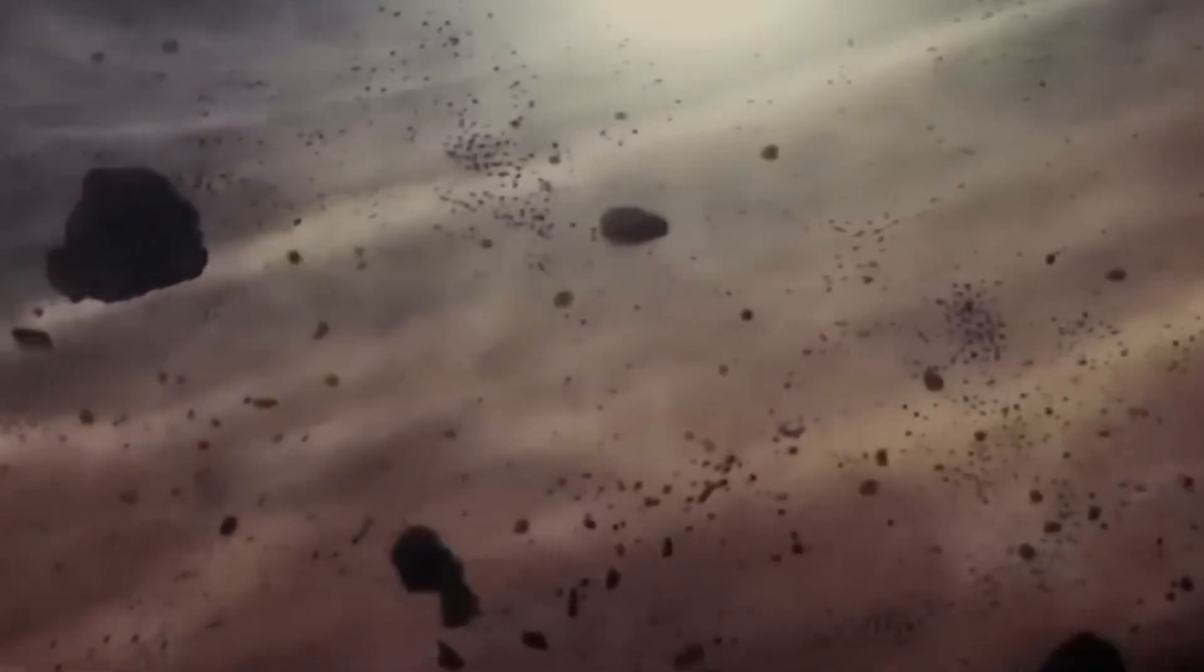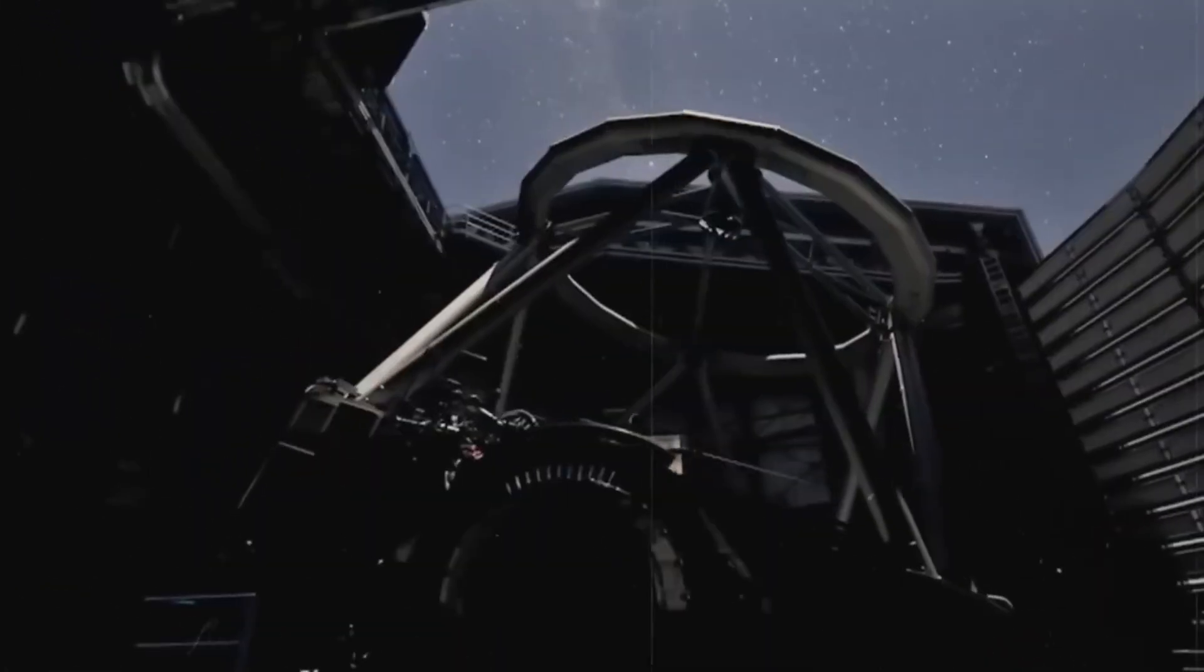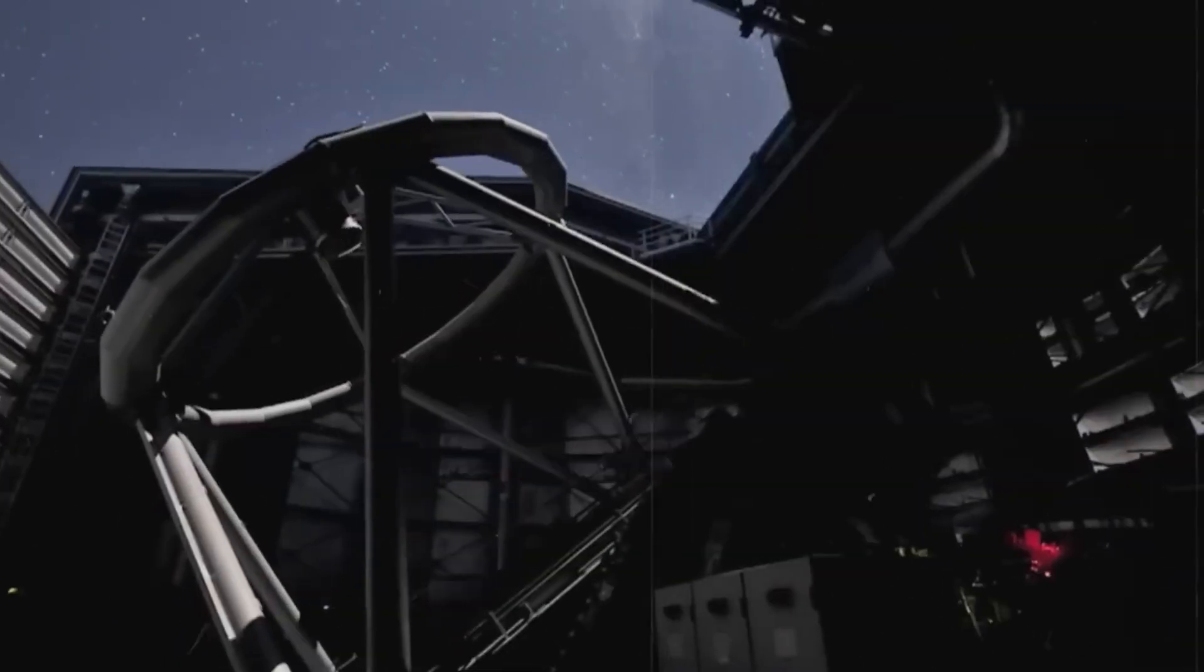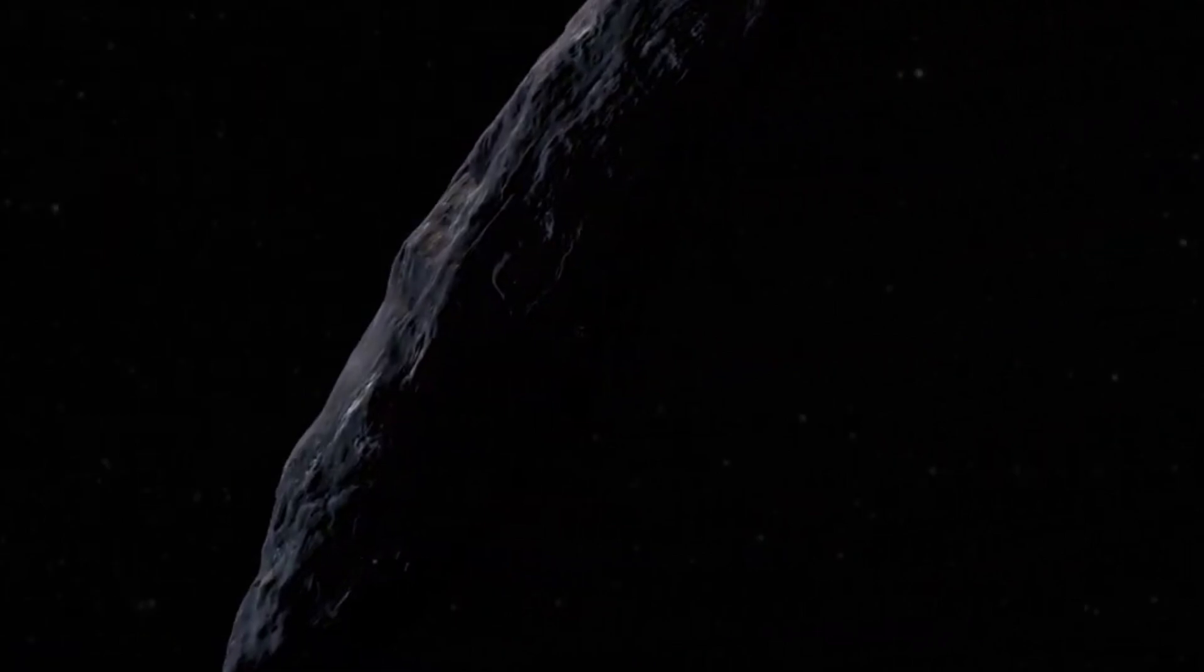On October 19, 2017, the Pan-STARRS-1 telescope, located on the summit of Haleakala in Maui, Hawaii, detected Oumuamua. This telescope, part of a project aimed at scanning the night sky for near-Earth objects, was not specifically looking for interstellar visitors. However, it was well-equipped to capture images and data of celestial objects, which led to the unexpected discovery of Oumuamua.